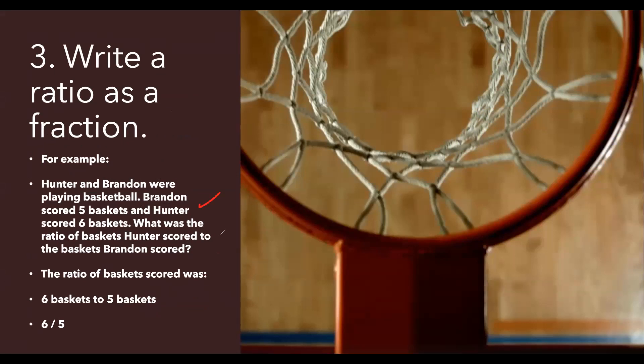For example, Hunter and Brandon were playing basketball. Brandon scored five baskets and Hunter scored six baskets. What was the ratio of baskets Hunter scored to the baskets Brandon scored? Six baskets to five baskets, that is six upon five. This is how we can write ratio.